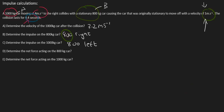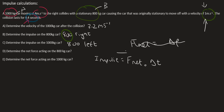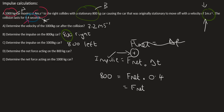Question D: Determine the net force acting on the 800 kg car. We use impulse equals F_net times ΔT, choosing right as positive. We worked out the impulse for the 800 kg car — that was 800. F_net we don't know, but the collision lasts 0.4 seconds. We end up with F_net equal to 2000 Newtons to the right.